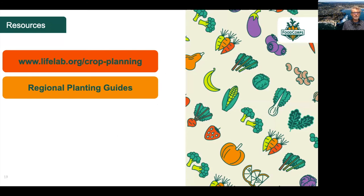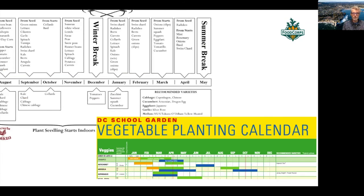Here are some really great resources for you. If you go to lifelab.org/crop-planning, we have loads of resources and a written explanation of what I just talked about, links to different school garden planting guides, and links to online calculators where you just put in your average last frost date and it spits out a crop plan for your climate zone. You should find your own regional planning guide — hopefully your states have already developed these. Here's an example from Tucson which notes winter break and summer break, mentions which things should be started indoors, and has recommended varieties that do well in their region. The DC school garden planting guide does similar things. If you're going to create your own planting guide for your region and school gardens, look at these guides because they have great extra information that is very handy for schoolyard gardeners.